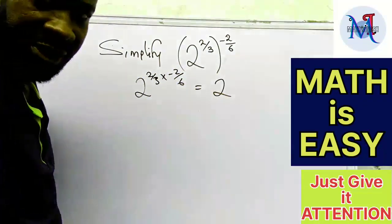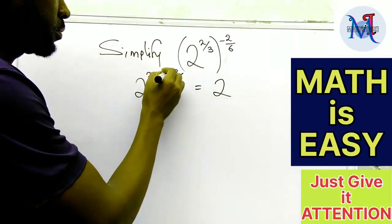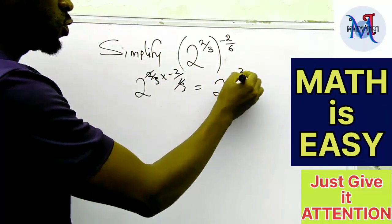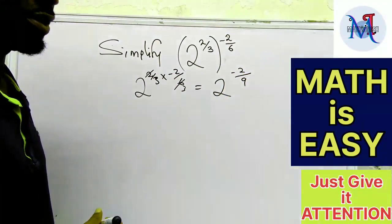And that gives us 2 here. That will give us 3. So I'm having minus 2 over 9. Can you see that?